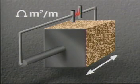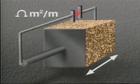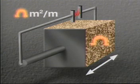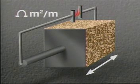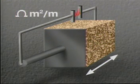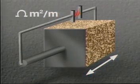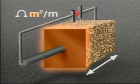It is important to remember that resistivity is measured in ohm-meters squared per meter, and arises from its definition as the specific resistance through a sample of a certain length and cross-section.